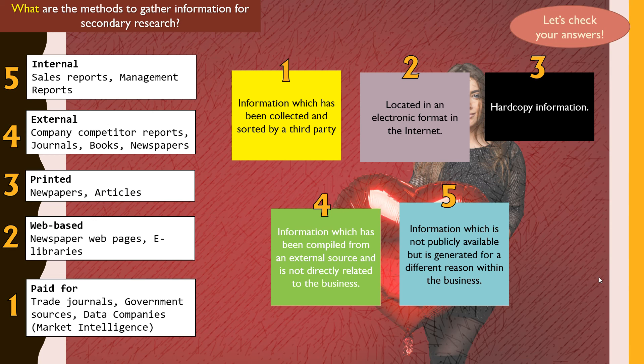It's also important to look at the benefits and disadvantages of using paid-for information, as well as using the web to gather information. Web-based information may not be precise, may be outdated, or irrelevant — although it is fast. There is more valuable information available that you need to pay for. These are the advantages and disadvantages relating to gathering information via secondary research.